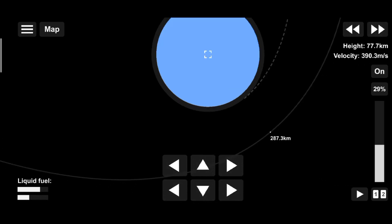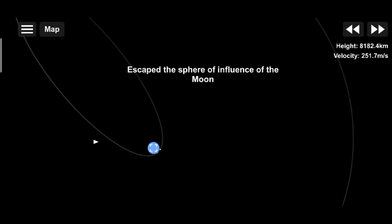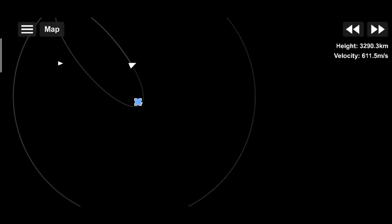That trans-Earth injection burn was very close to nominal. At this time, we show the spacecraft traveling at a speed of 7,603 meters per second.